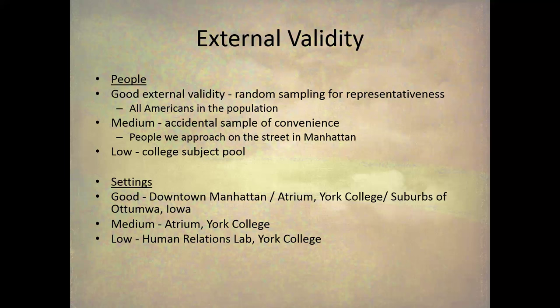An example of low external validity would be using a college subject pool. Here you have a very special sample — college students taking intro psych — and you want to apply the results to all Americans or all people. That's very low external validity.